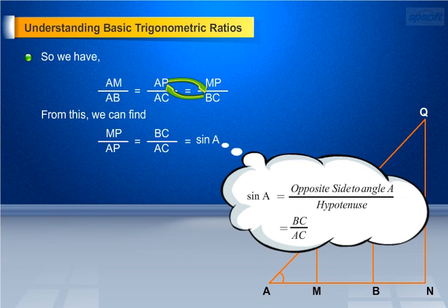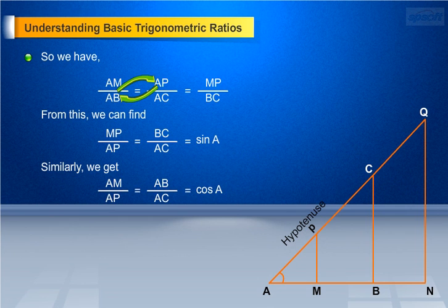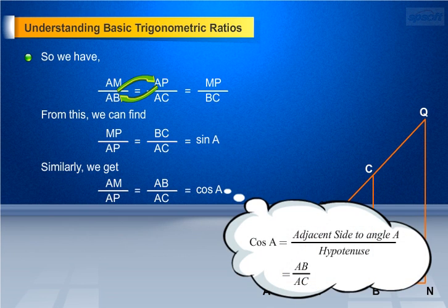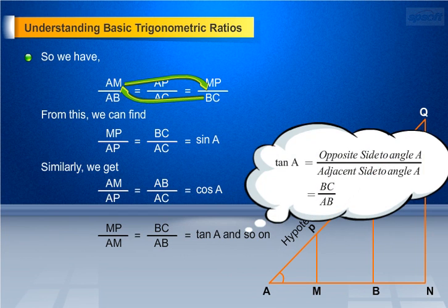Since sin A equals opposite side to angle A by hypotenuse, which is equal to BC/AC. Similarly, AM/AP = AB/AC = cos A, since cos A equals adjacent side to angle A by hypotenuse, which equals AB/AC. And MP/AM = BC/AB = tan A, since tan A equals opposite side to angle A by adjacent side to angle A.